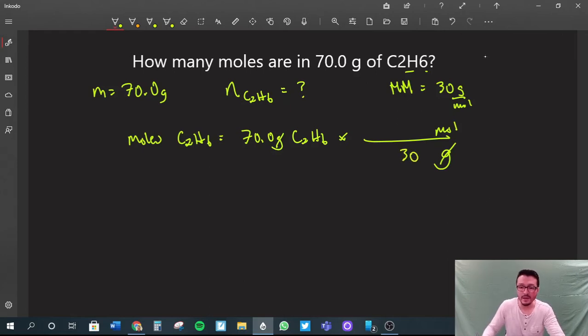So we write 30, and it doesn't appear to be a number associated with 1, but we know that it's 30 grams for every 1 mole. What we're really doing here is taking mass divided by molar mass. If you do that, we get 2.3 repeating. That'll be moles of C2H6. That's our first question.